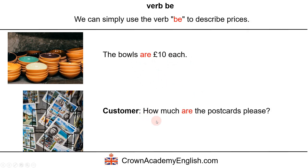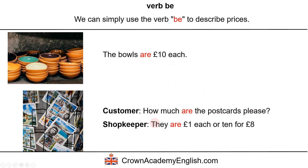The customer asks: how much are the postcards please? Here we have again the verb be in the third person plural, asking a question. And the shopkeeper replies: they are 1 pound each, or 10 for 8 pounds. So we can simply use the verb be followed by the price.